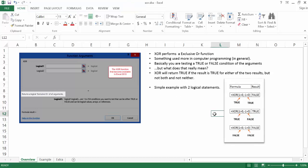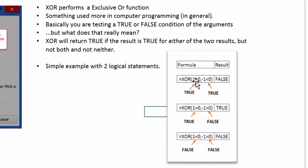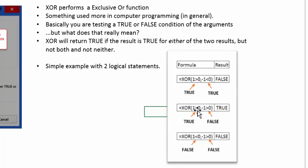So maybe an example would help. If we have two logical statements and we're using them in the XOR function, and we're saying 1 is greater than 0 — that's true — and negative 1 is less than 0 — that's true. And if negative 1 is greater than 0, well that's clearly false.